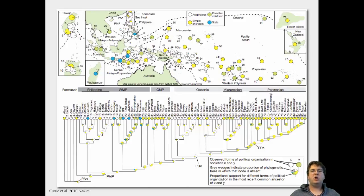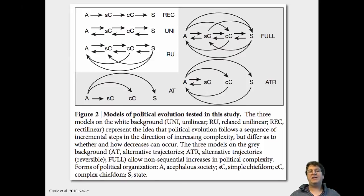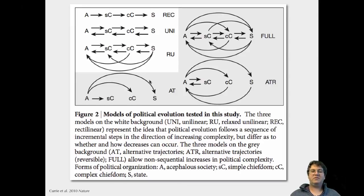Here's a paper by Curry et al. published in Nature, looking at human societal evolution. They have a phylogeny of humans based on their language, with states for different human societies: acephalous societies, simple chiefdoms, complex chiefdoms, or states. They test a variety of models of political evolution — a strictly linear model, a model allowing transitions between neighboring complexity levels, one allowing jumps back to simpler states, or a full model allowing any transition.